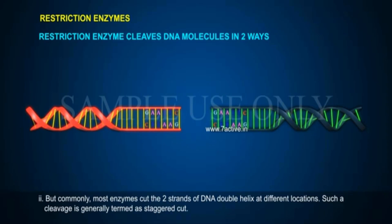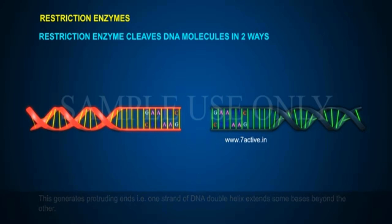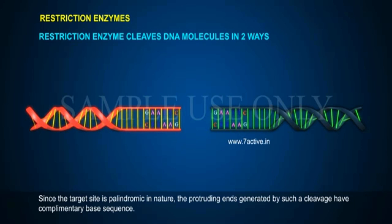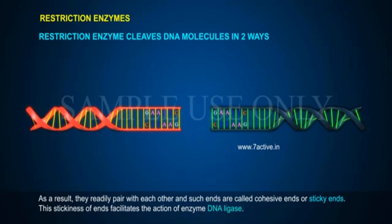Commonly, most enzymes cut the two strands of the DNA double helix at different locations. Such a cleavage is generally termed a staggered cut. This generates protruding ends — that is, one strand of the DNA double helix extends some bases beyond the other, since the target site is palindromic in nature. The protruding ends generated by such a cleavage have complementary base sequences. As a result, they readily pair with each other, and such ends are called cohesive ends or sticky ends.